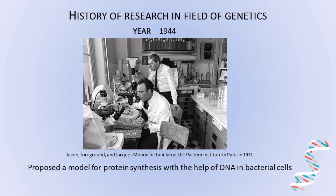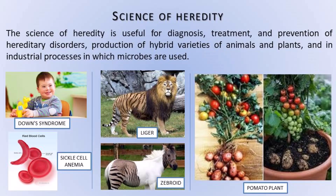Thereby, the technique of recombinant DNA technology emerged, which has vast scope in the field of genetic engineering. The science of heredity is useful for diagnosis, treatment, and prevention of hereditary disorders, production of hybrid varieties of animals and plants, and industrial processes in which microbes are used — that means, for the welfare of mankind, the science of genetics is used.